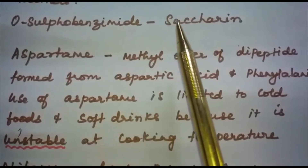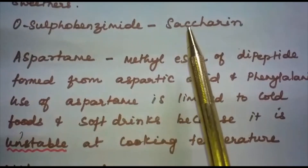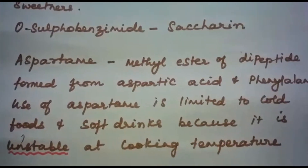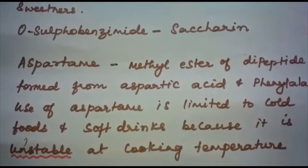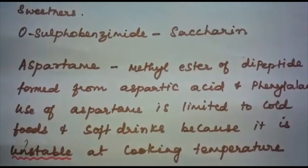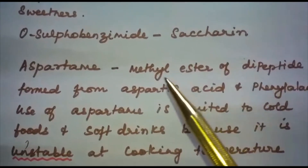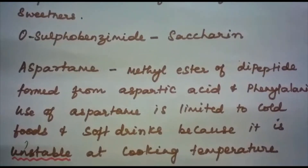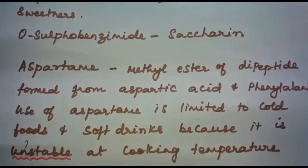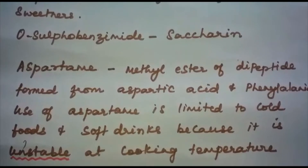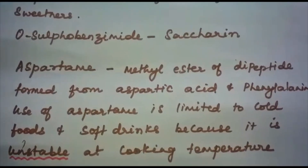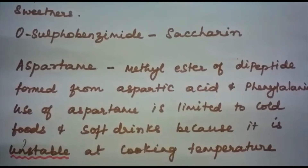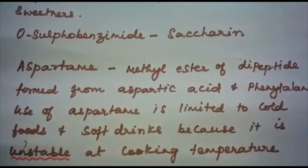Orthosulfobenzoic acid imide, which is popularly known as saccharin, is the first popular artificial sweetening agent. It has been used as a sweetening agent ever since it was discovered in 1879 and it is about 550 times as sweet as cane sugar. It is excreted from the body in urine unchanged, appears to be entirely inert and harmless, and is of great value to diabetic persons and people who need to control intake of calories.